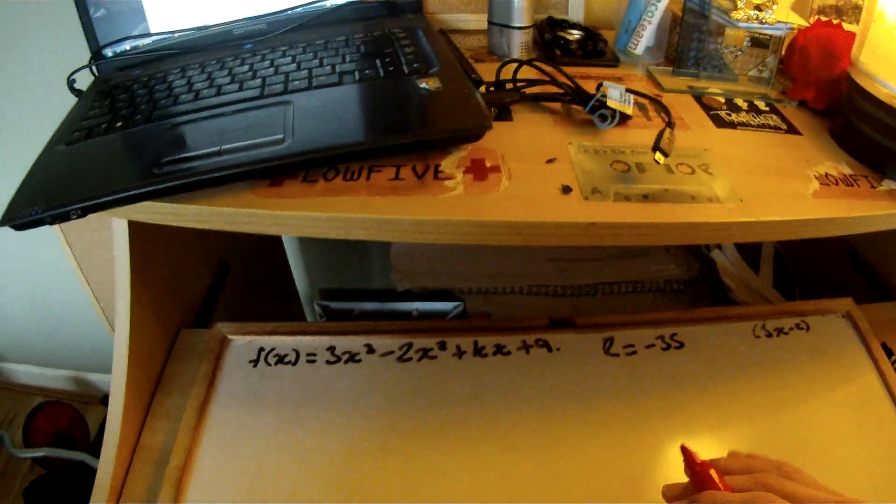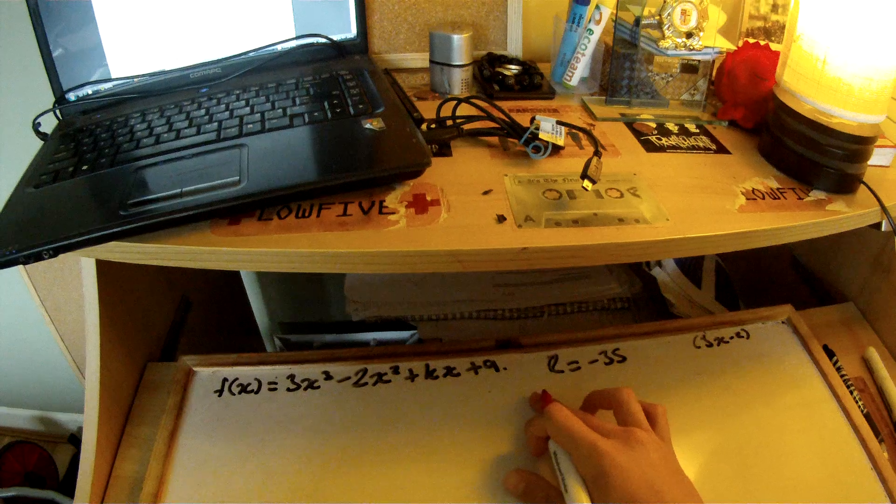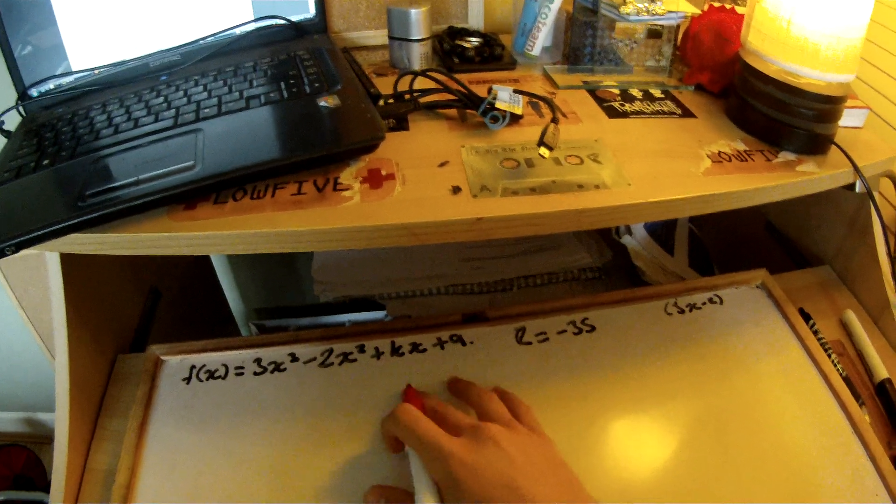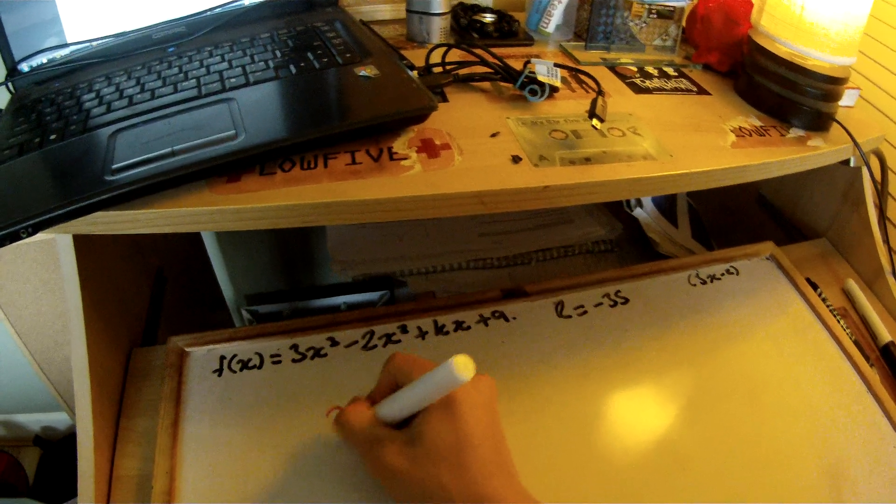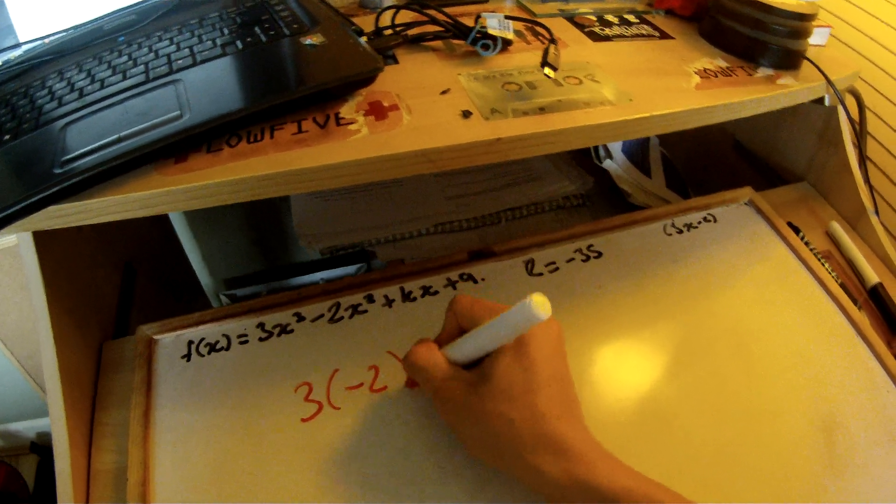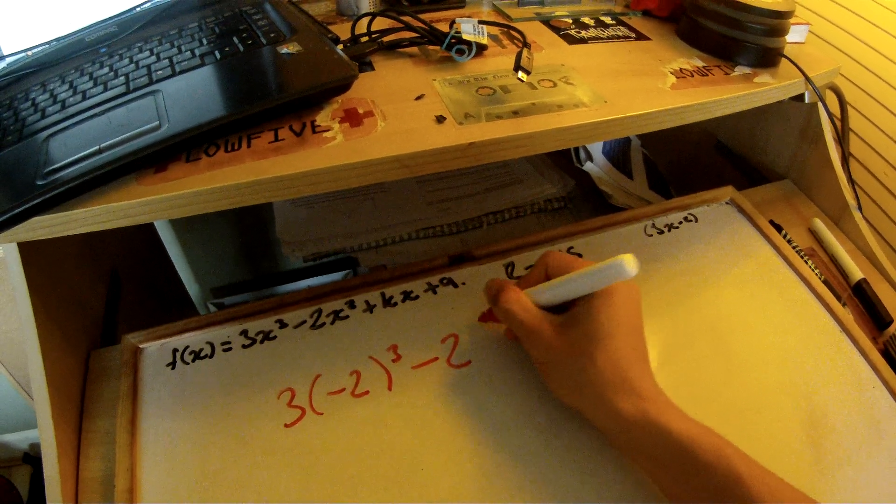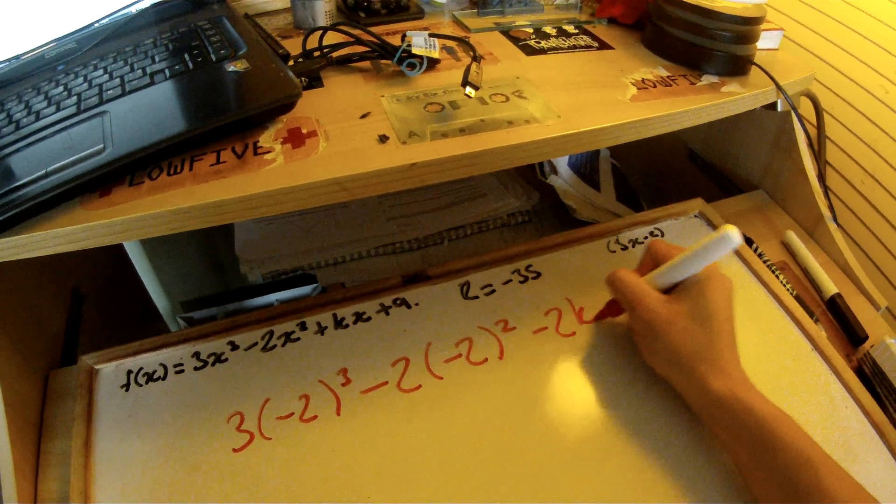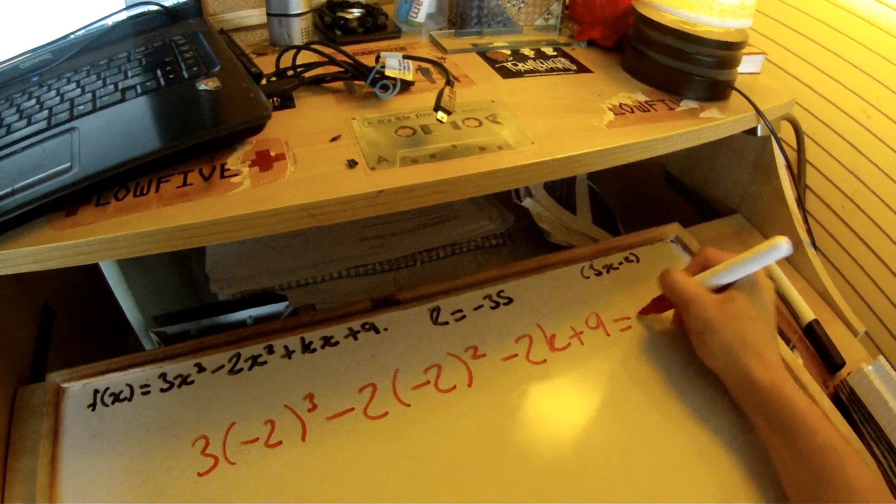Okay, right. Basically what you're going to do is place minus 2 into this formula here and make it equal to minus 35. So, 3 brackets minus 2 cubed minus 2 minus 2 squared minus 2k plus 9 equals minus 35.